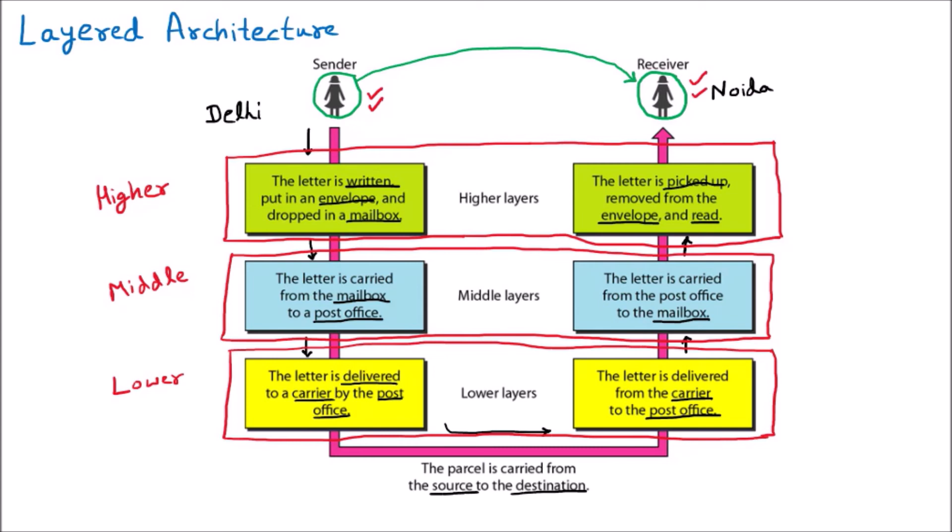The higher layer deals with the users. In a real-life network scenario, if you are using software like Microsoft Teams, you interact with me via your system and I via mine. The layer interacting with both of us is the higher layer — it handles all protocols, graphical displays, and everything visible on your screen.